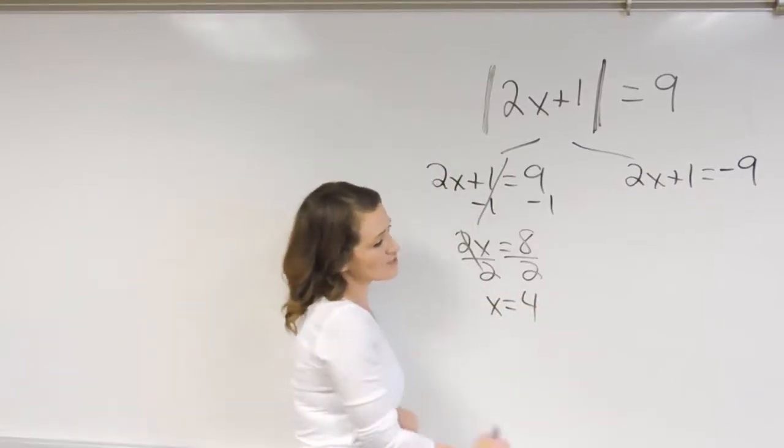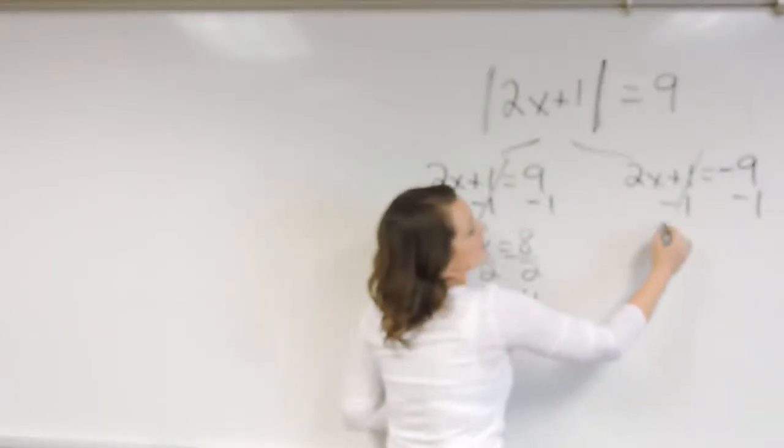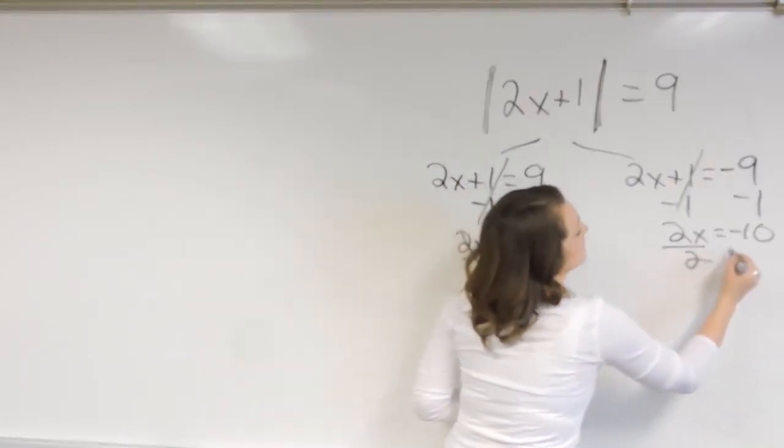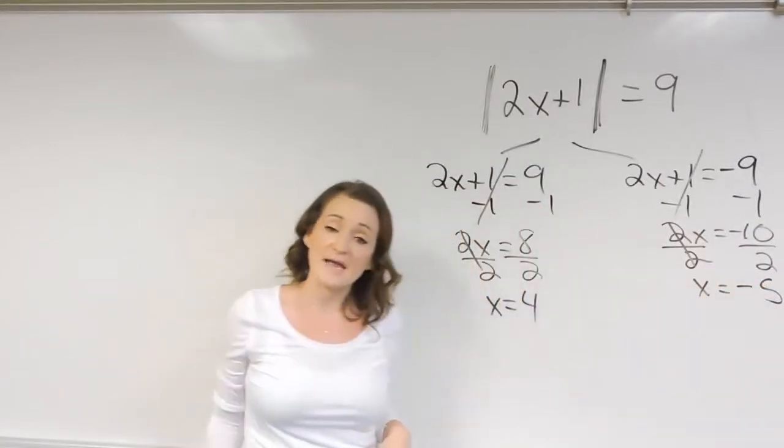Solve the other equation. So here we would subtract 1 on both sides, and we get that 2x equals negative 10. And then divide out the coefficient to give that x equals negative 5.